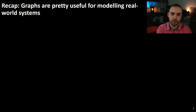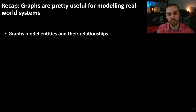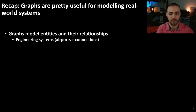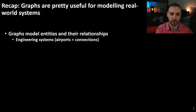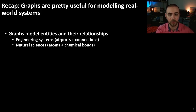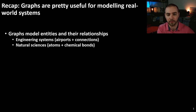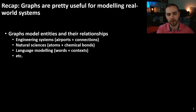As we've discussed in previous videos, graphs are extremely useful for modeling real-world systems, and the real power of graphs comes from their ability to model entities and their relationships. For example, in engineering systems — especially transportation engineering — you might consider airports and their connections. In the natural sciences, maybe chemistry, you might think of atoms and chemical bonds. Or in language modeling, you might consider words and their contexts. These are all things that can be defined in terms of a graph, and you can find examples in almost any area of study.